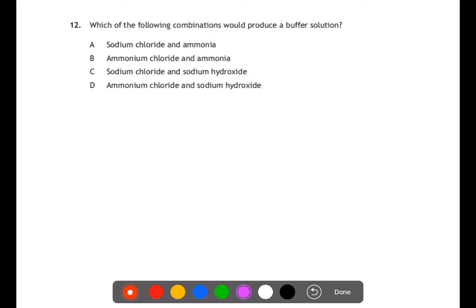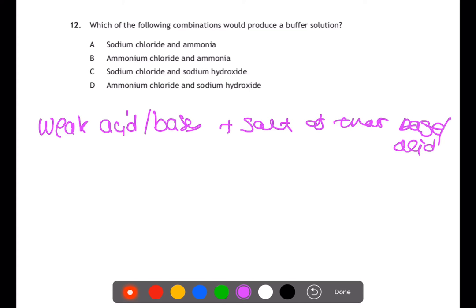Question 12. Which of the following combinations would produce a buffer solution? You need to know the definition of a buffer solution. Buffer solutions are made from weak acids or bases plus a salt of that acid or base. Sodium chloride and ammonia: we have a weak base there, however this is an incorrect salt. Ammonium chloride and ammonia: we have a weak base and a salt which is made from that base, so that will act as a buffer. For sodium chloride and sodium hydroxide, they are made from strong acids and bases, and one is a strong base. And then for ammonium chloride and sodium hydroxide, we have a strong base and a salt which is made from a weak base, but they don't go together as a buffer.